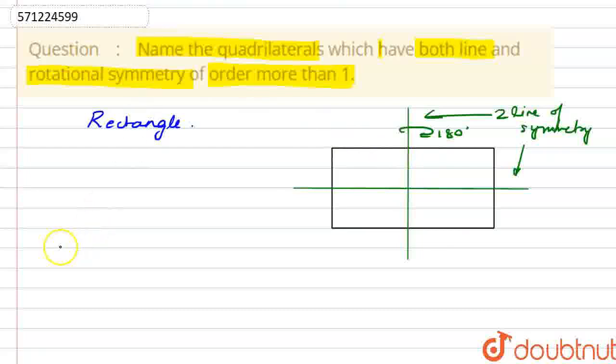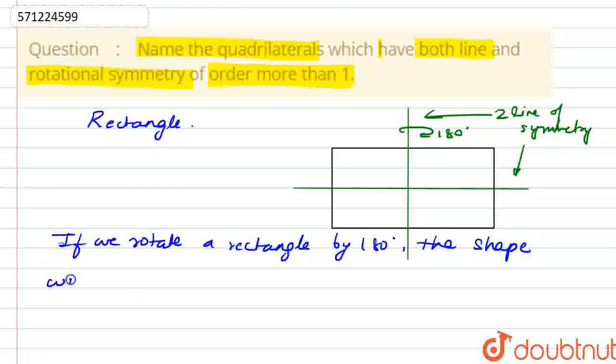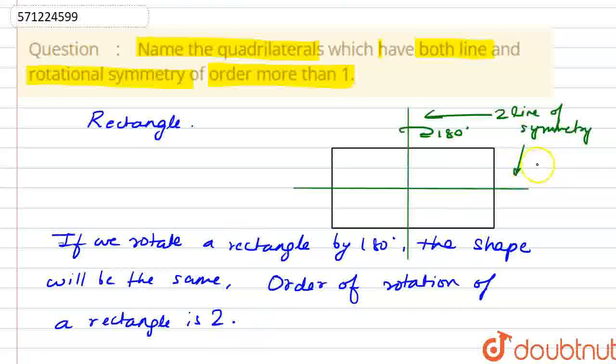So therefore, we can also say, if we rotate our rectangle by 180 degrees, the shape will be the same. So here we can say that the order of rotation of a rectangle is 2, which we can see here that is more than 1. So here we have fulfilled both the conditions.